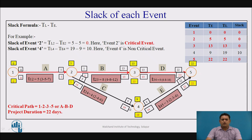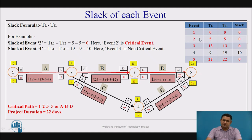The overall network diagram shows the red color arrows representing the forward path, with the project duration being 22 days. The table represents events and their slacks — red color events are critical ones and black color events are non-critical ones.